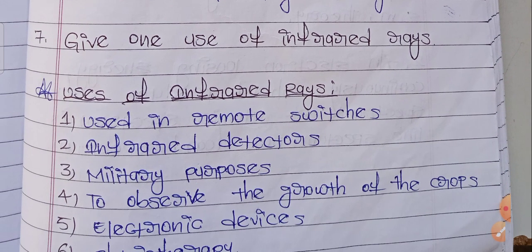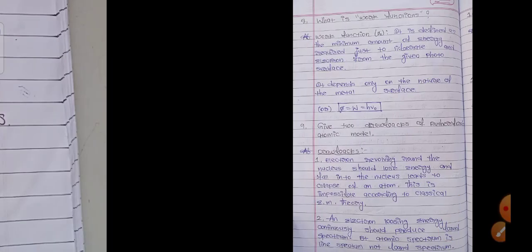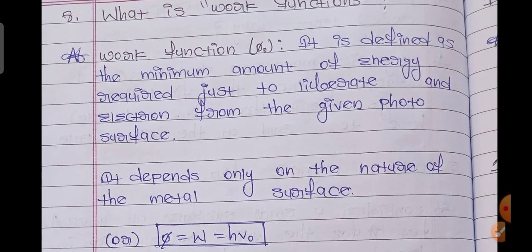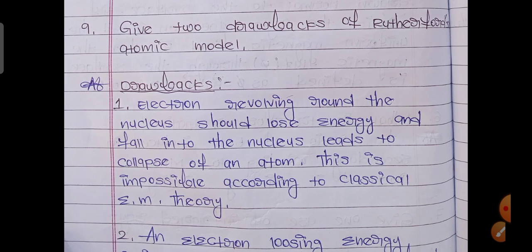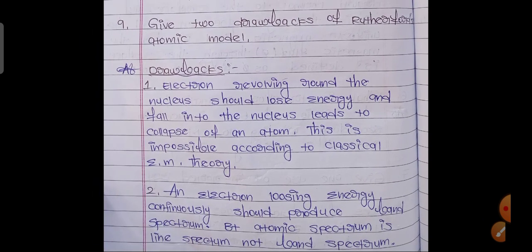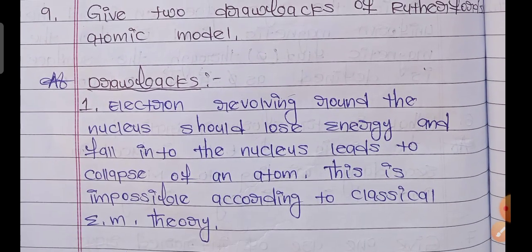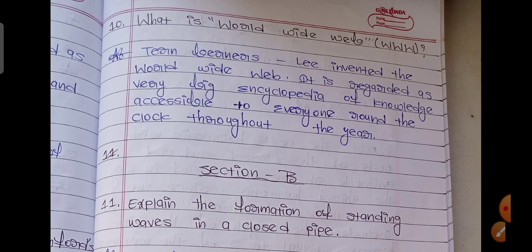Sixth: what is transformer ratio? Seventh: give one use of infrared rays. Up to here seven I have completed. Eighth: what is work function? Ninth: give two drawbacks of Rutherford's atomic model. Tenth: what is the World Wide Web — WWW means World Wide Web — you have to define it according to what the author explained.